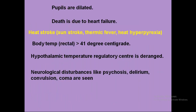In heat exhaustion, the pupils will be dilated and death is due to heart failure if not treated immediately by giving fluids. Heat stroke is otherwise known as sunstroke, thermic fever, or heat hyperpyrexia. When the rectal temperature is greater than 41 degrees centigrade, we call it heat stroke. The hypothalamic temperature regulatory center is deranged, causing loss of sweating, which then affects neurological systems — causing psychosis, delirium, convulsions, coma, and finally death.